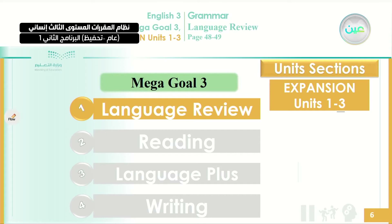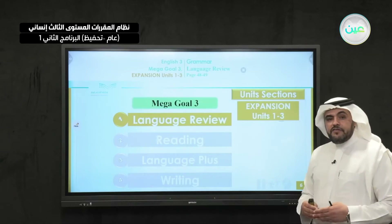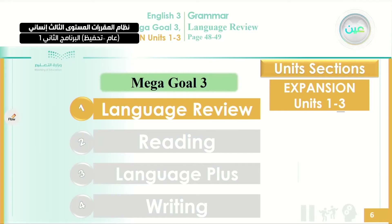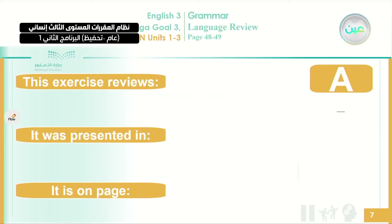You should know that the division of units one to six is different from the expansion unit. This expansion unit is divided into four sections, while the main units are divided into 13 sections — listen and discuss, pair work, grammar, conversation, and so on. Here, this unit is divided into four sections: number one, language review, which we cover today; number two, reading; number three, language plus; and the last one, writing. We are going to start with exercises A through F.